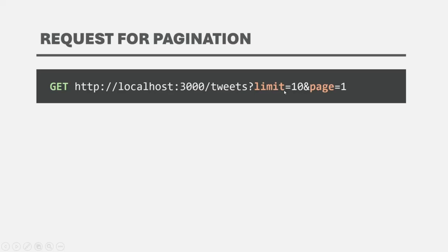We can also allow the user to change this number — to set the limit value as 10, 30, or 50 based on the requirement. With the request, we are also specifying for which page we are actually requesting the data. Here I have specified the page as 1, so from the API we are going to get the first 10 records. When I specify page as 2, we are going to get the next 10 records — that means records from 11 to 20. If I specify page as 3, then we will get records from 21 to 30 and so on.